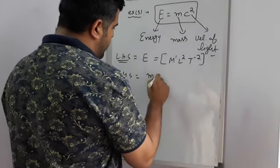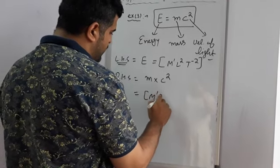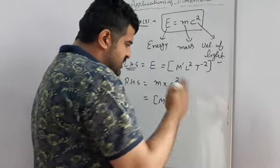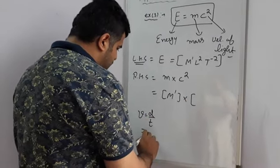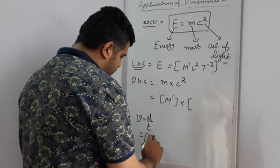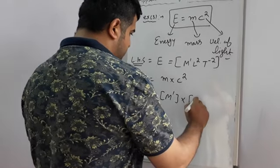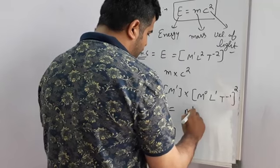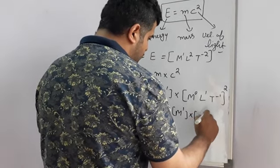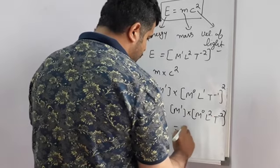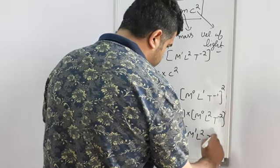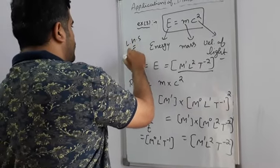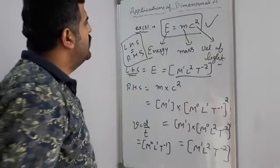On the right hand side there are two terms: m and c². Mass m has dimensional formula M¹. The velocity of light c is also a velocity, and velocity equals distance upon time, so its dimensional formula is M⁰L¹T⁻¹. Squaring gives L²T⁻². Multiplying by M¹ gives M¹L²T⁻². So left hand side equals right hand side, and this formula is also dimensionally correct.